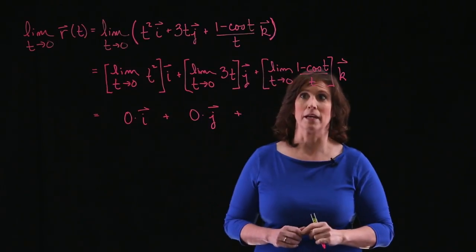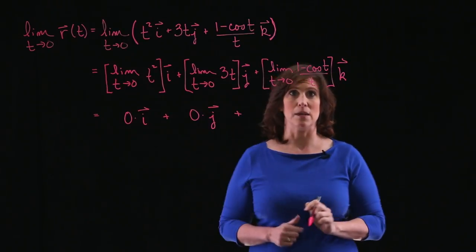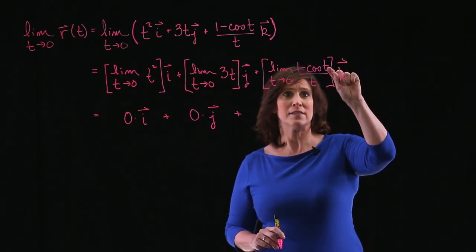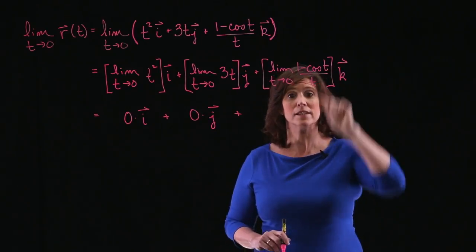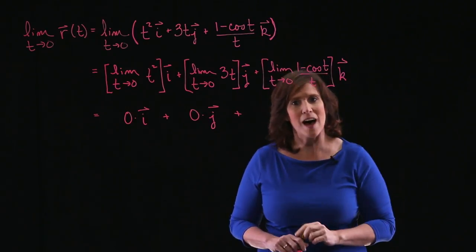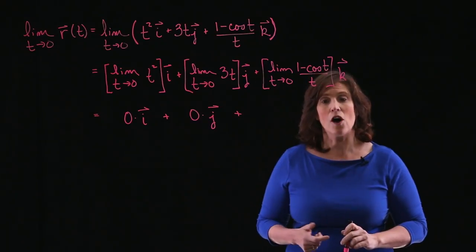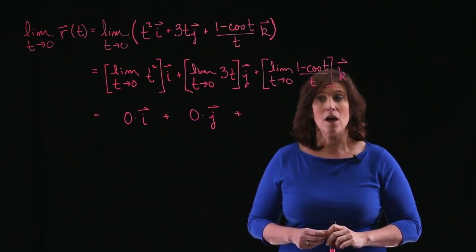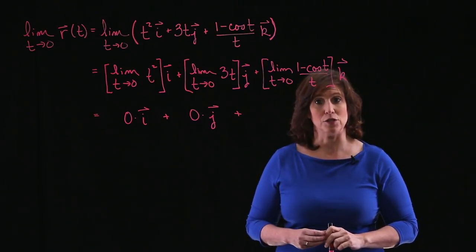This last component is more complicated. As t approaches 0, the cosine of 0 gets close to 1. And 1 minus 1 is 0. But we're also dividing by 0. This is what's called an indeterminate form. So you can't just do a direct substitution for the limit.